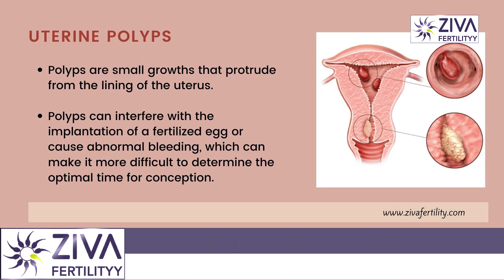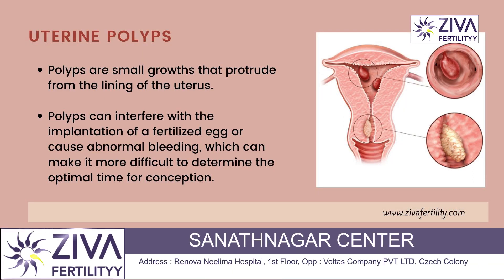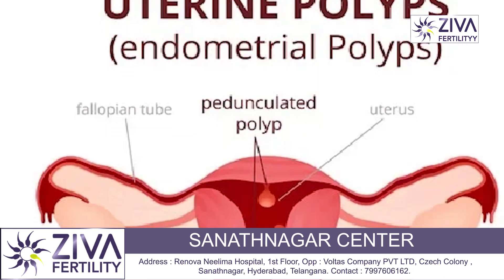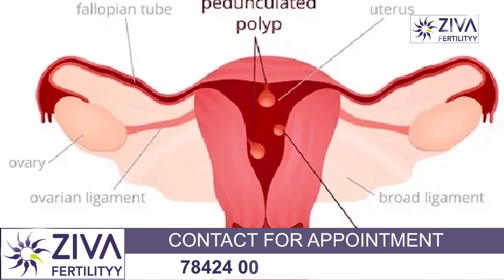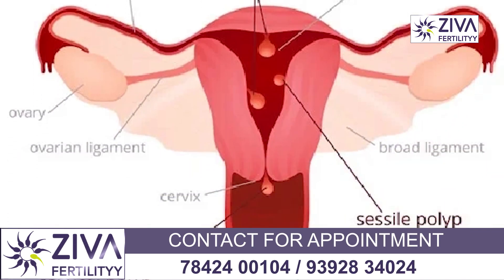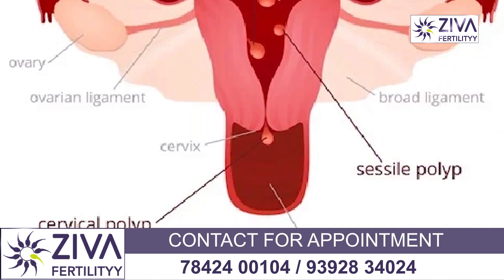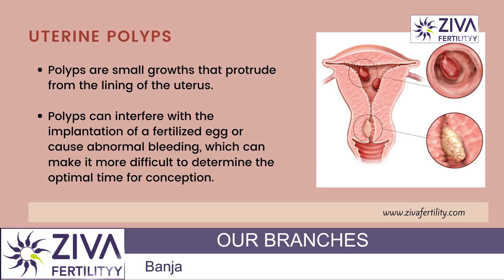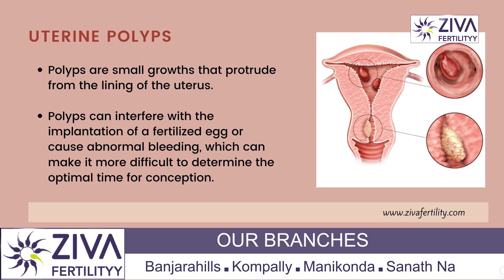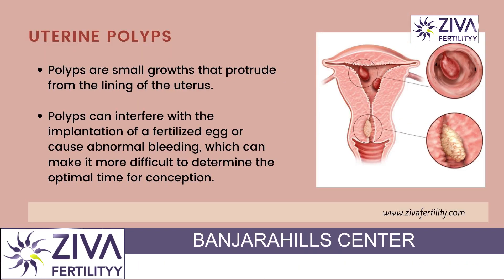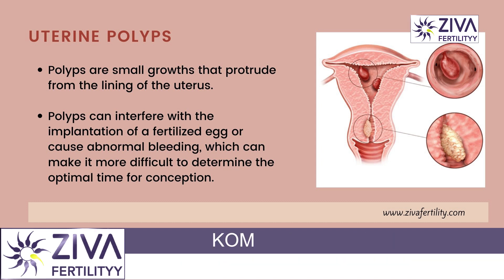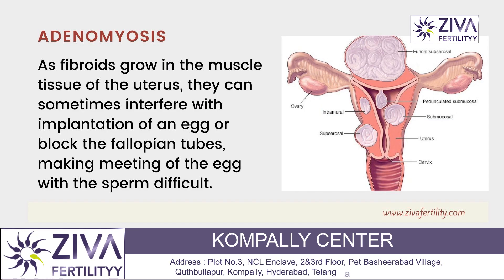Let's look at uterine polyps. Polyps are small growths that protrude from the lining of the uterus. They can interfere with the implantation of a fertilized egg or cause abnormal bleeding, which can make it more difficult to determine the optimal time for conception.